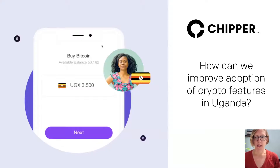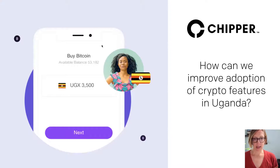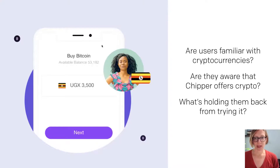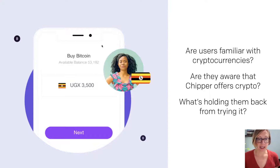And we're going to be using as an example Chipper Cash, which is a person-to-person mobile payments platform that serves consumers in Africa. Chipper Cash recently launched a cryptocurrency feature within their app, and they were seeing lower than desired adoption rates. So they wanted to do some research to understand how they can improve adoption, specifically with users in Uganda.